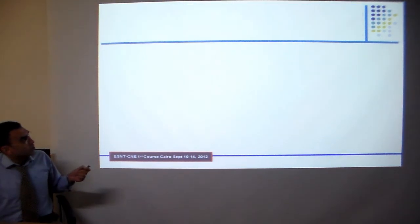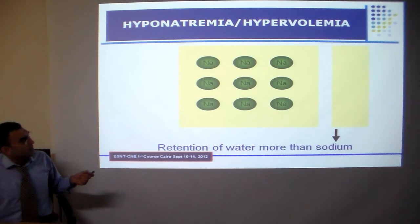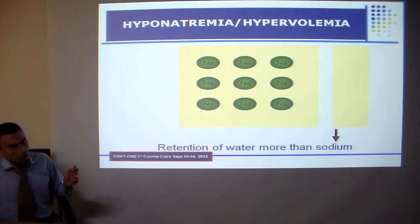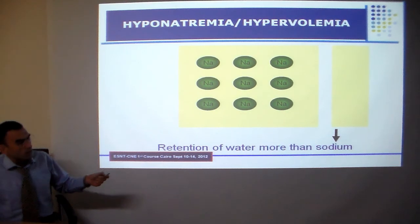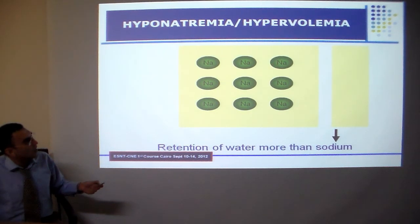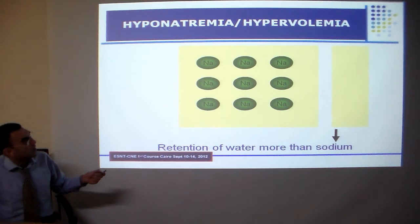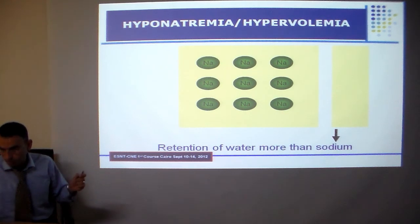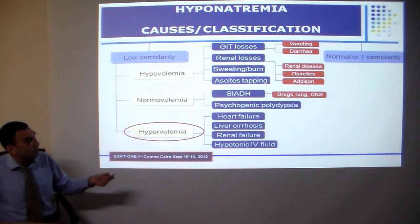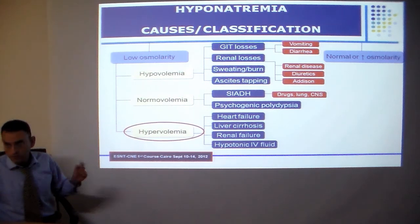In hypervolemic hyponatremia, there is retention of water more than sodium. So there is hypervolemia but hyponatremia, because water is retained more than sodium. This occurs in many cases with heart failure and liver cirrhosis.